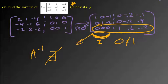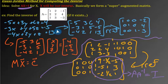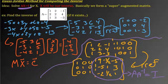You can also compute inverses using a calculator by raising A to the negative one power. This method is called the Gauss-Jordan method for computing an inverse, and it's a good way to visualize the connection back to systems of equations, which is still at the core of so much of what we're doing.